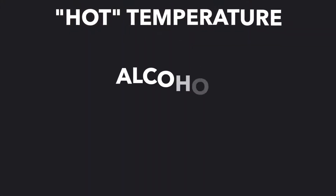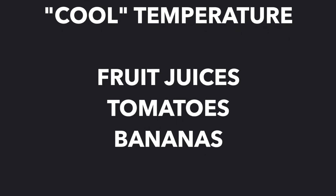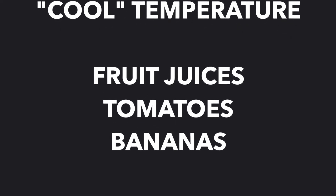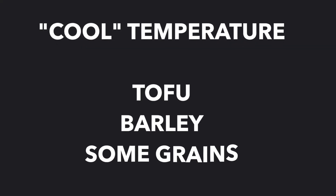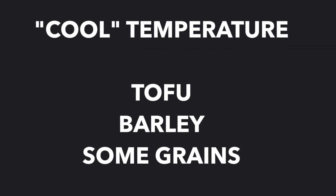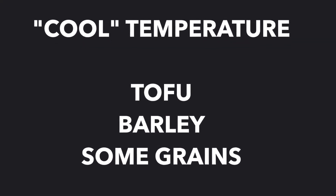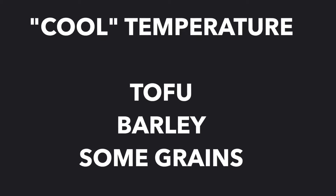Some examples of chi or temperature: something hot would be alcohol, ginger, chilies, or peppers. Cool could be fruit juices, tomatoes, or bananas. As far as meats go, warmer meats are beef and chicken. And grains, for example, are typically on the cooler side of the spectrum, like barley, tofu, and wheat.